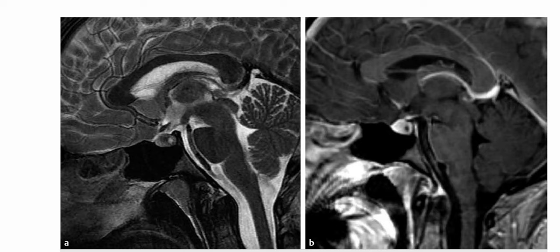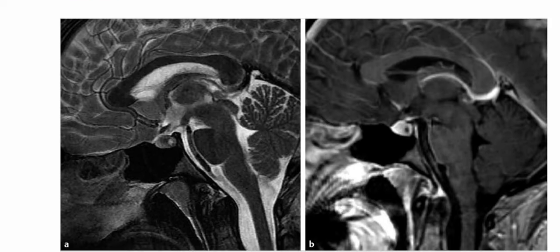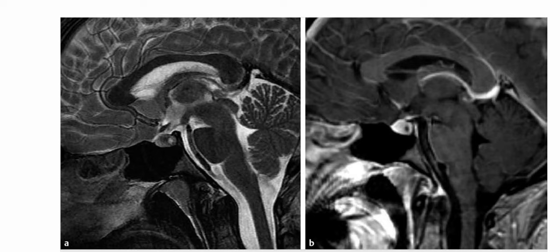This is a 16-year-old girl presenting with chronic headaches. The sagittal T2-weighted MRI shows a circumscribed hyperintense cystic lesion within the posterior aspect of the pituitary gland with a tiny hypointense nodule along its posterior inferior margin. The sagittal post-contrast image shows lack of enhancement within the cystic portion of this lesion.